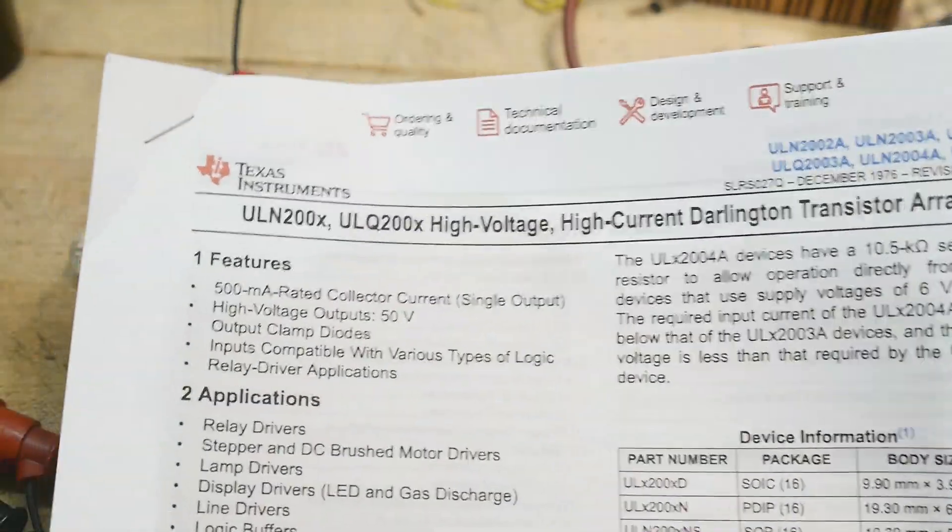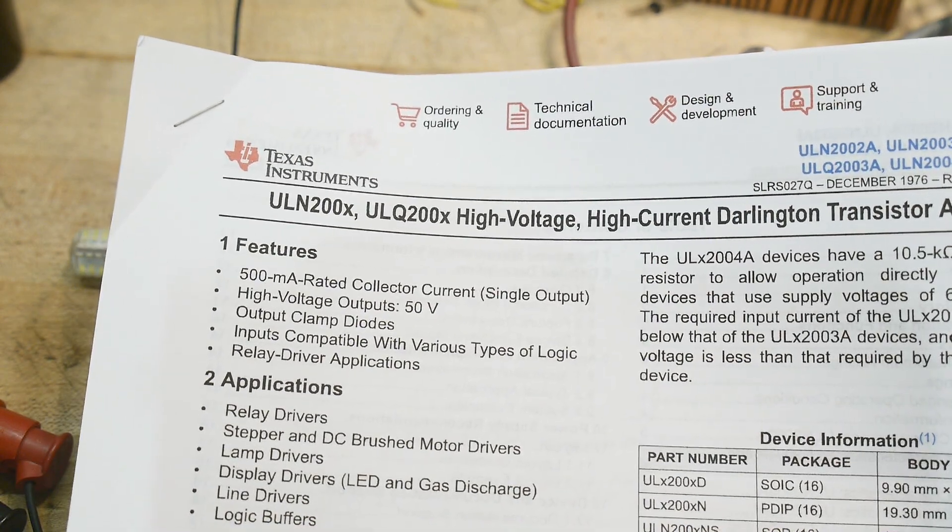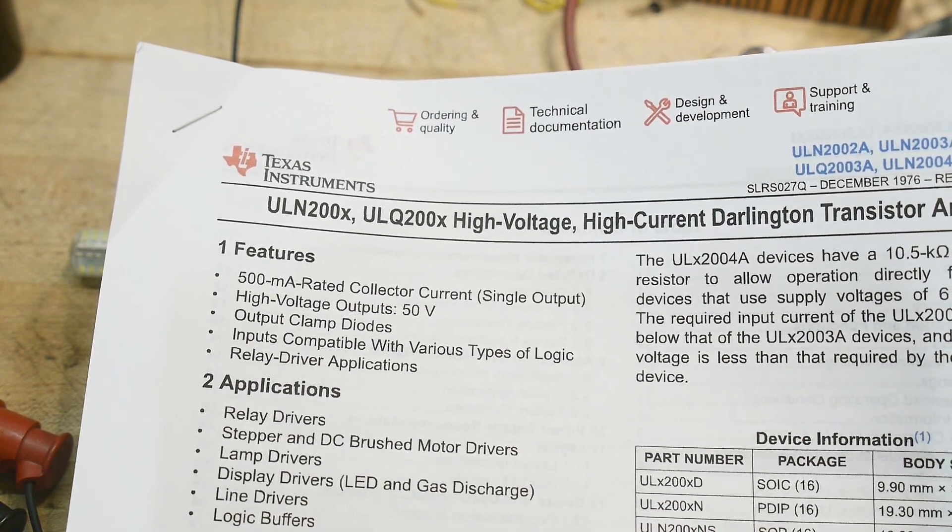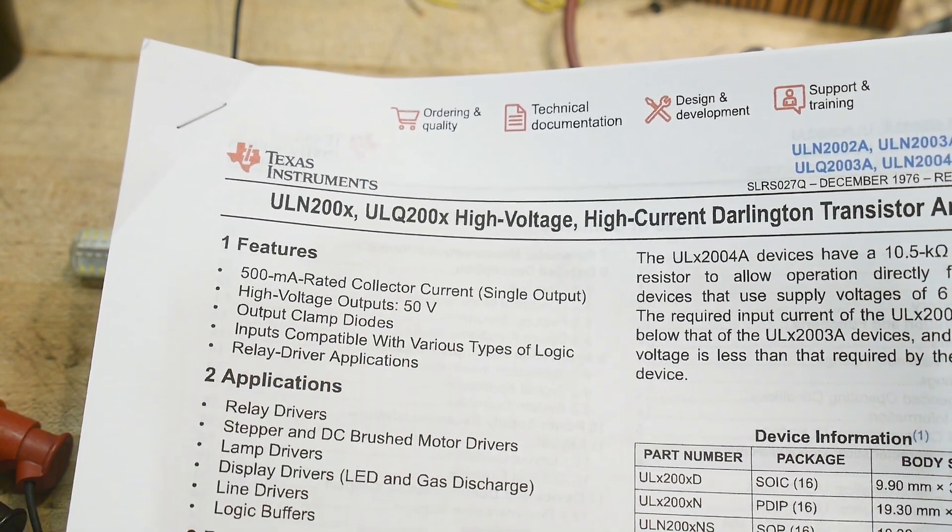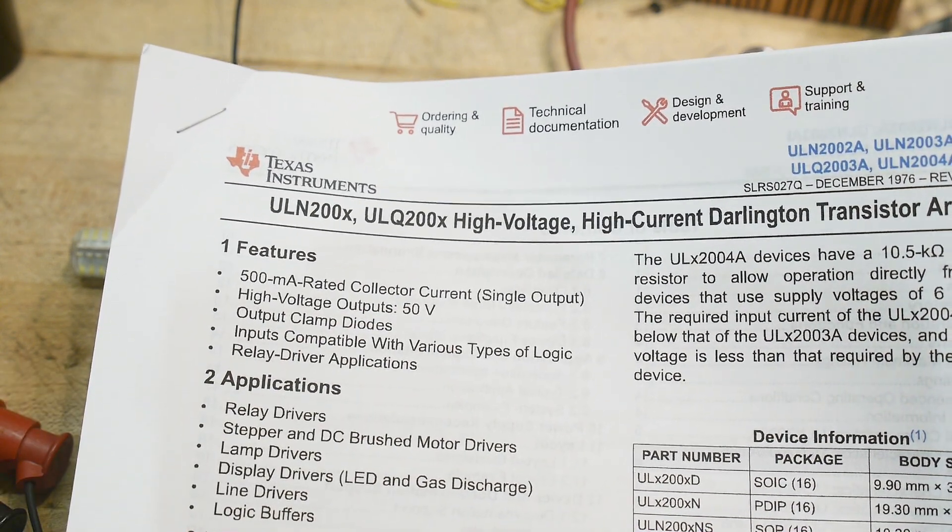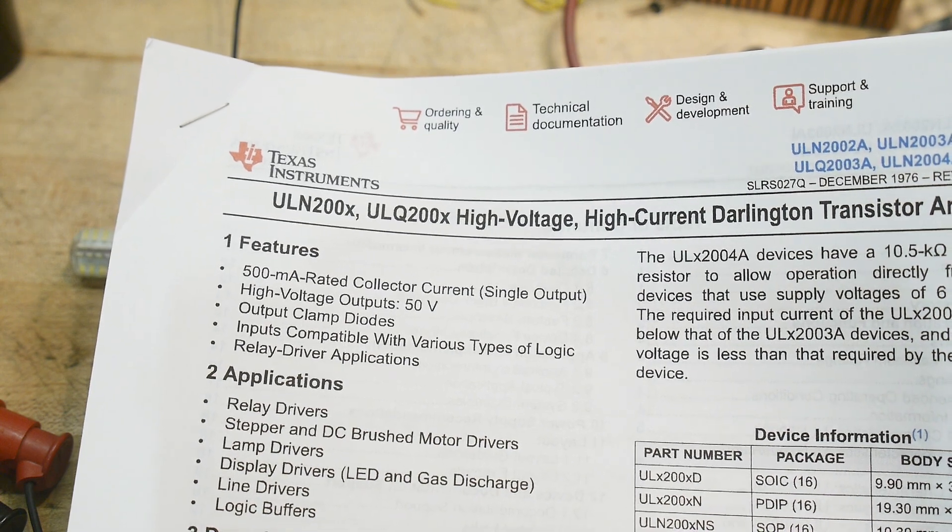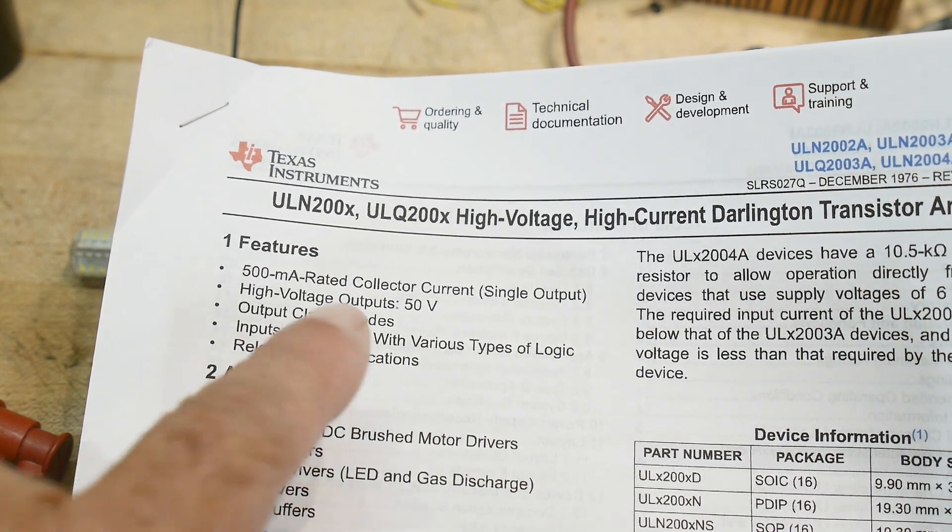Let's see what it says it's good for. It can run 500 milliamp devices on the output. Nice. It's up to 50 volts on the output. Nice. So it's open collector, except for those diodes. It has open collector on the output. It has output clamp diodes.